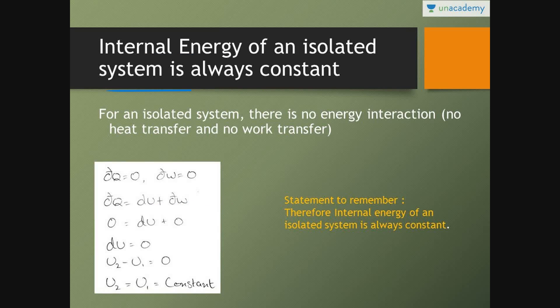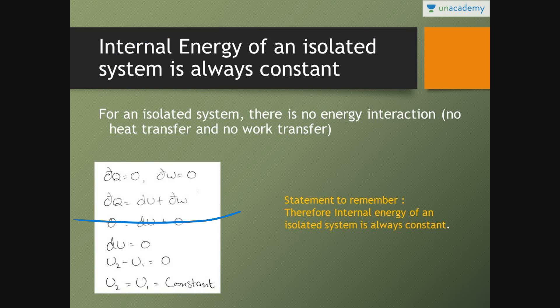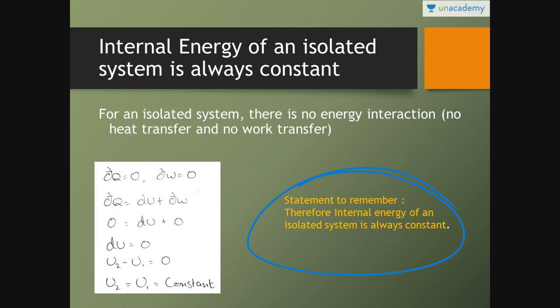Third result: internal energy of an isolated system is always constant. From the first law DQ equals dU plus DW — for an isolated system there is no energy interaction, meaning no heat transfer and no work transfer. So DQ equals zero and DW equals zero, which gives dU equals zero. Since U is a property, dU equals U2 minus U1, so U2 equals U1 equals constant. Therefore, internal energy of an isolated system is always constant.